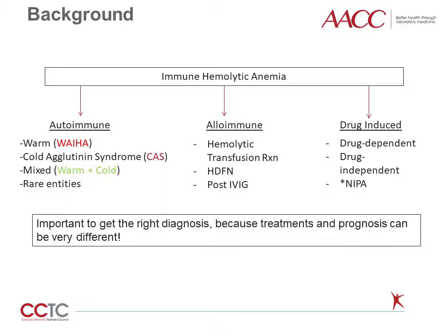Another important type of alloimmune hemolysis is hemolytic disease of the fetus or newborn, sometimes called HDFN. In this entity, maternal antibodies cross the placenta and mediate hemolysis of fetal red blood cells, sometimes resulting in fetal hydrops.